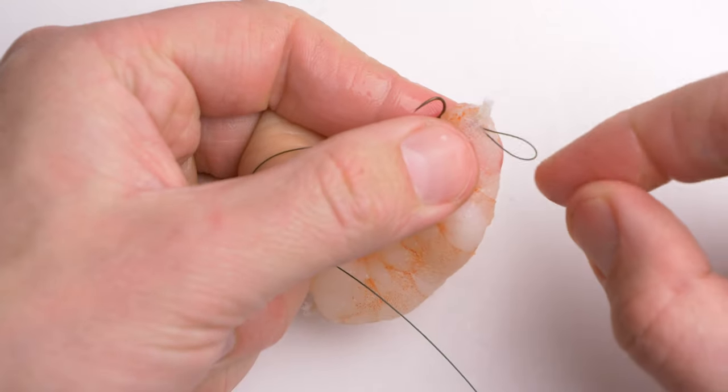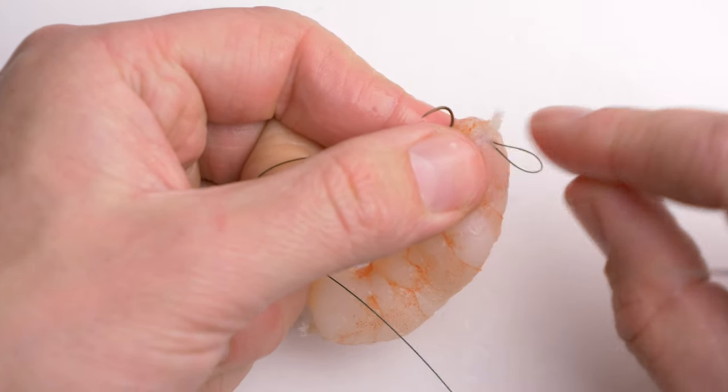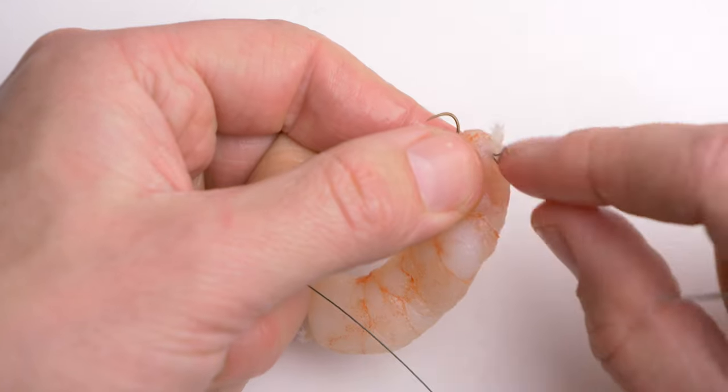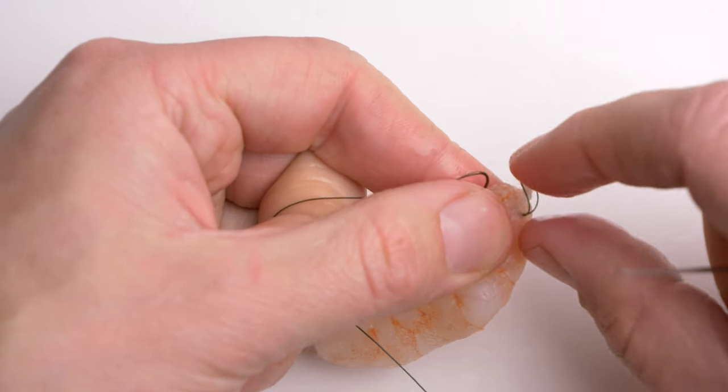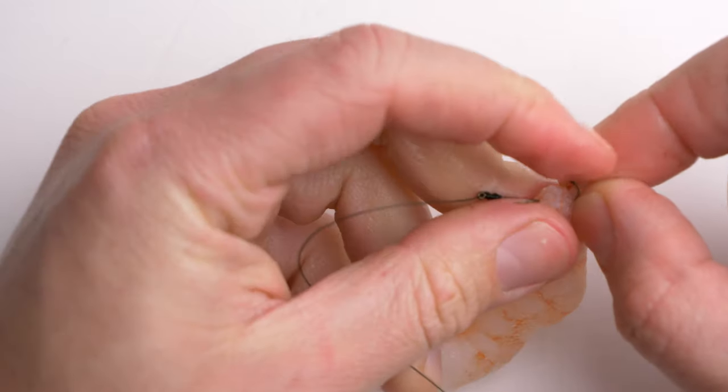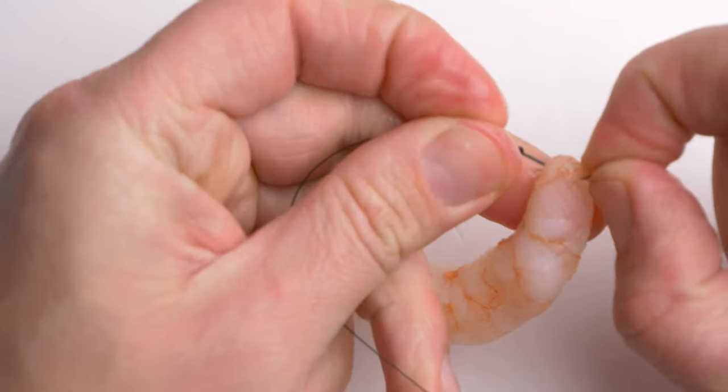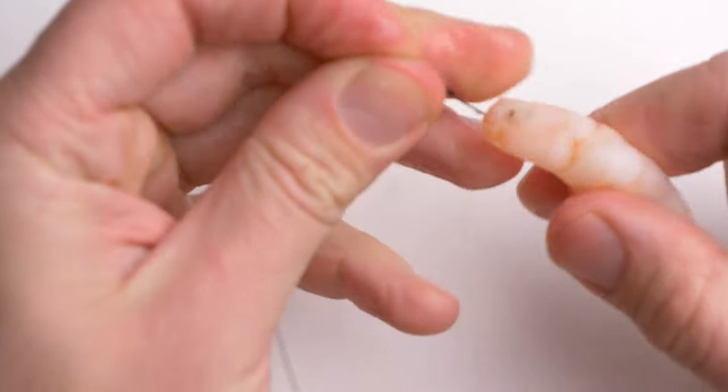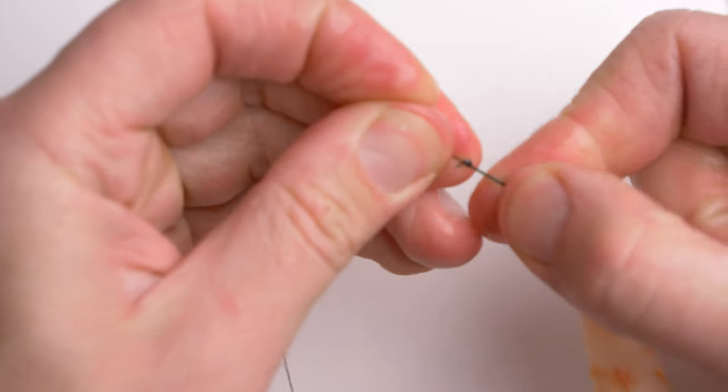Just like that. And then, it's quite smart actually, you just put the loop around the knot in the mesh. Just like that. And then you can pull a little bit of the knot inside.